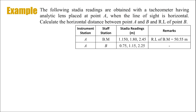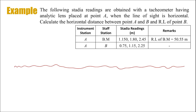Now let's solve an example. We are asked to calculate the horizontal distance between point A and point B, and also the reduced level of point B. The type of lens used in the tacheometer is the analytic lens, and the staff is held at two points: the benchmark and point B. The instrument station is at point A only. The reduced level of the benchmark is also given. The stadia readings are taken at point B and at the benchmark.